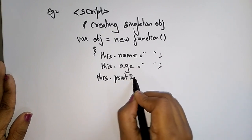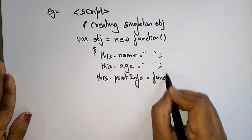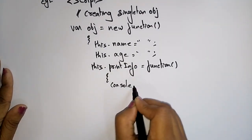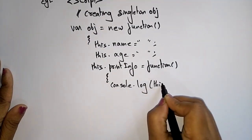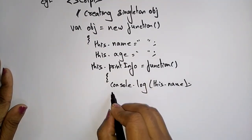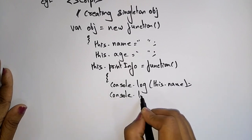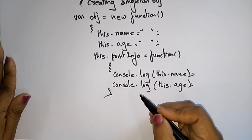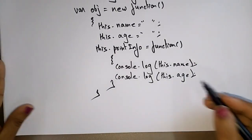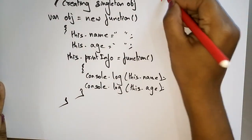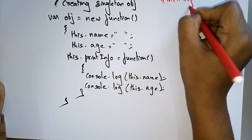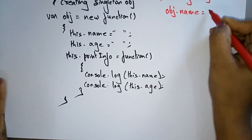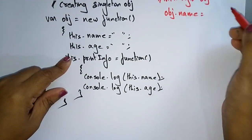I'm writing another function called 'printInfo', which is assigned as a function. Inside, it uses console.log for 'this.name' and console.log for 'this.age'. This defines the class structure. Now, let's look at initializing the object.